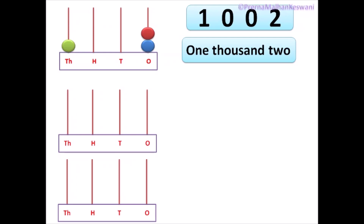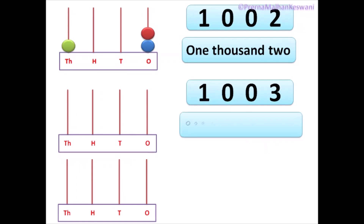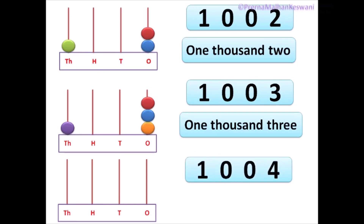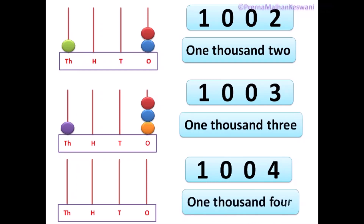Now, what comes after 1,002? That's right — 1,003. And how will it be presented in words? 1,003. Try to make it on the abacus: 1 bead in the 1000s place and 3 beads in the 1s place. 100s and 10s places will remain empty because they are 0. After 1,003, let's go to 1,004. Present it on an abacus: 1000s place will have 1 bead and 1s place will have 4 beads.